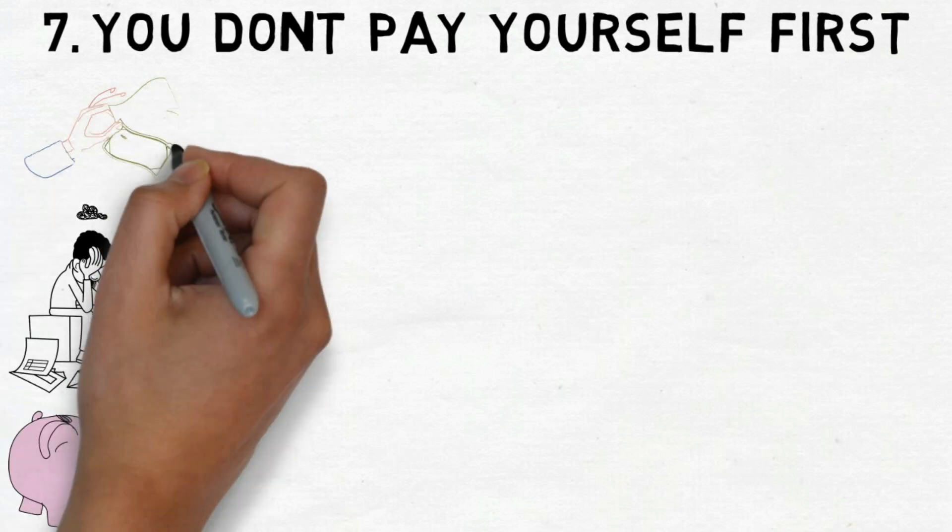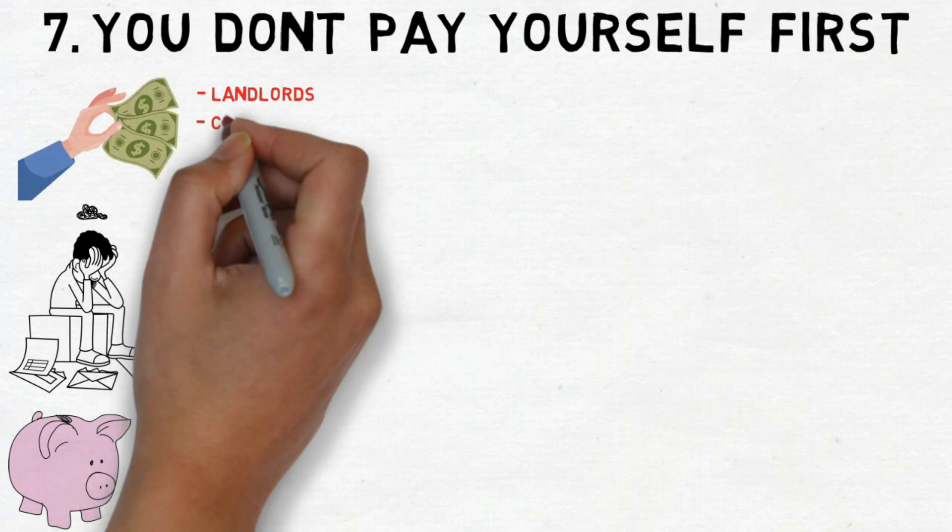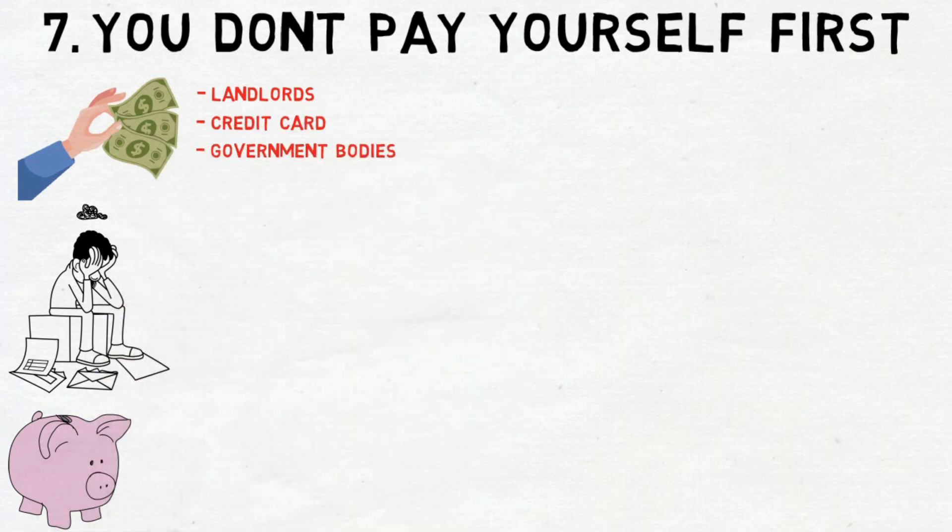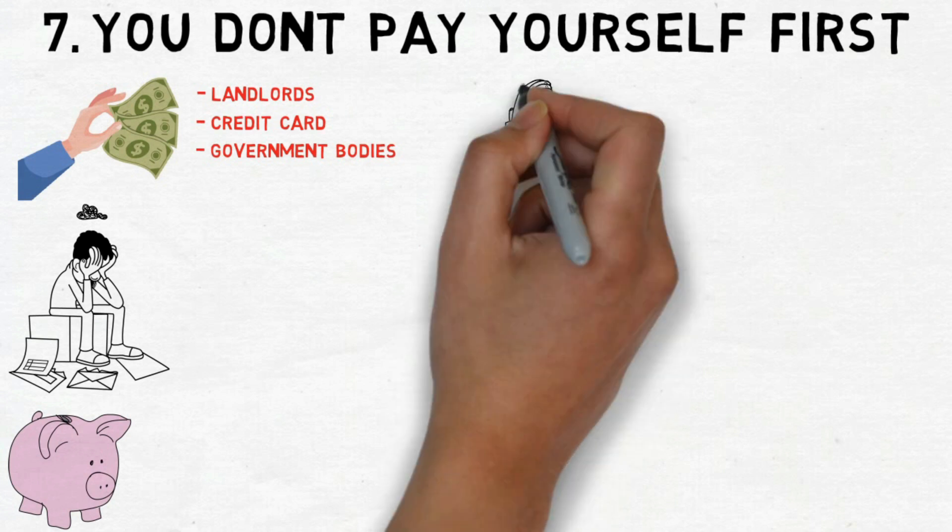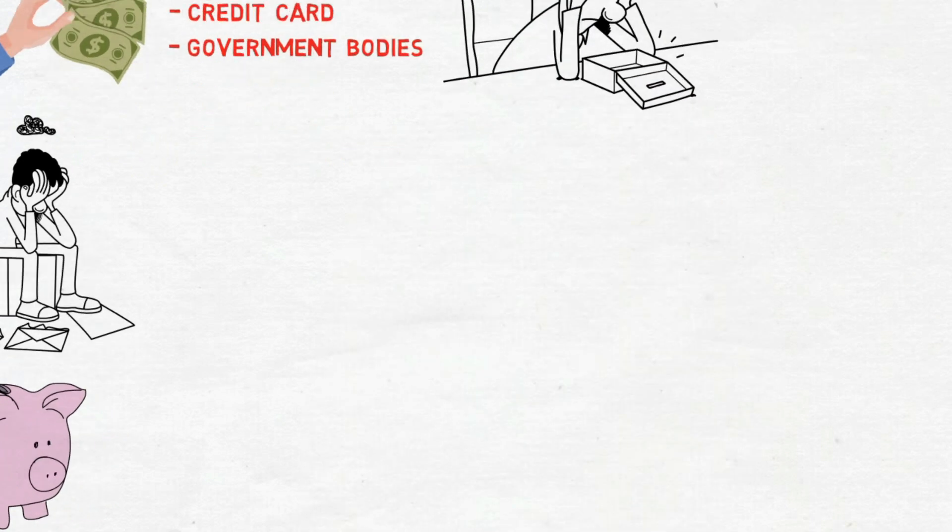Upon receiving their earnings, people promptly disperse funds to various entities like landlords, credit card companies, and government bodies. This often results in them having minimal or no resources left for personal use by the end of the month.